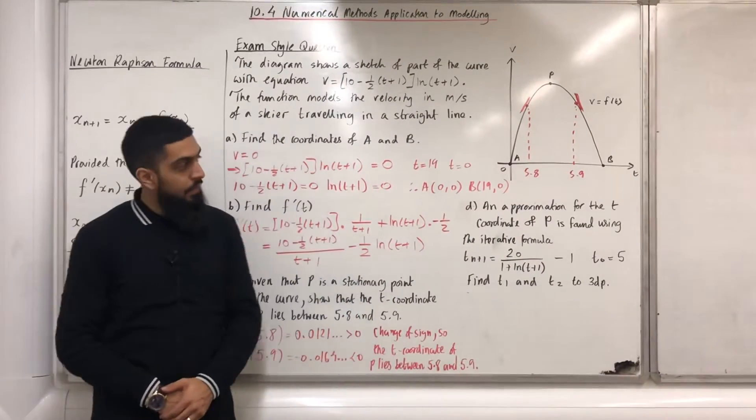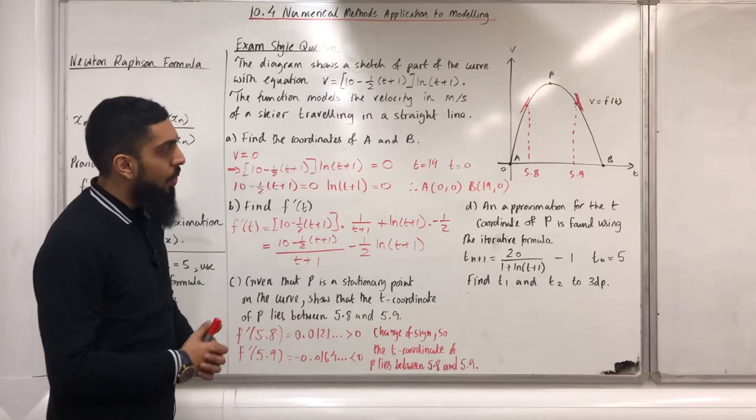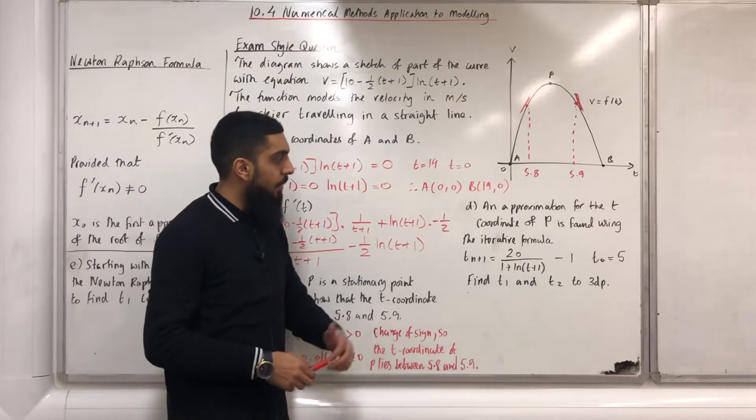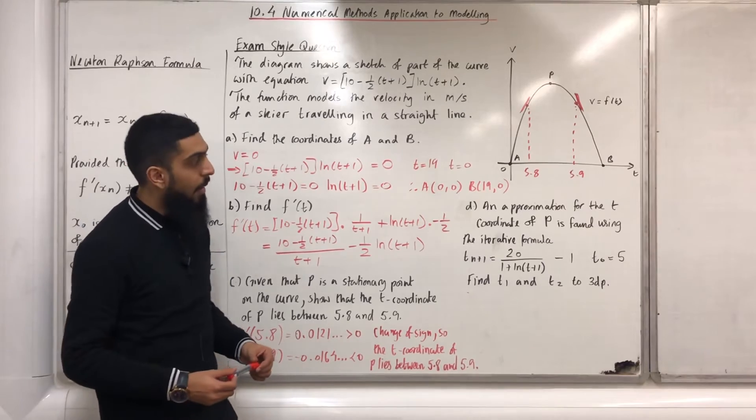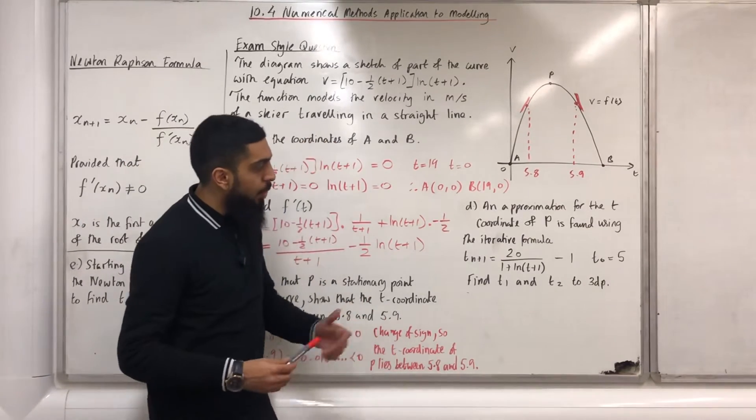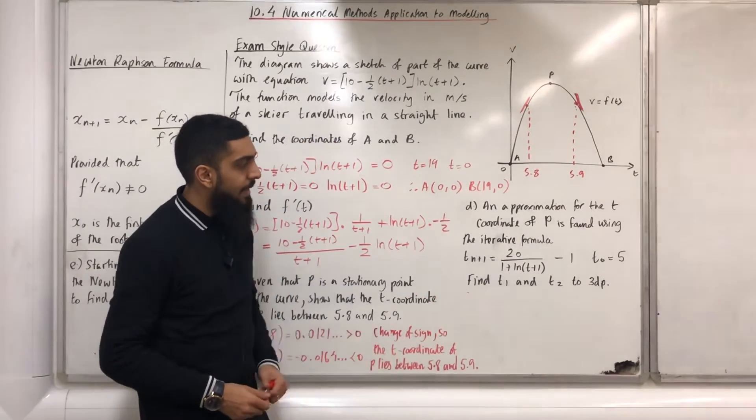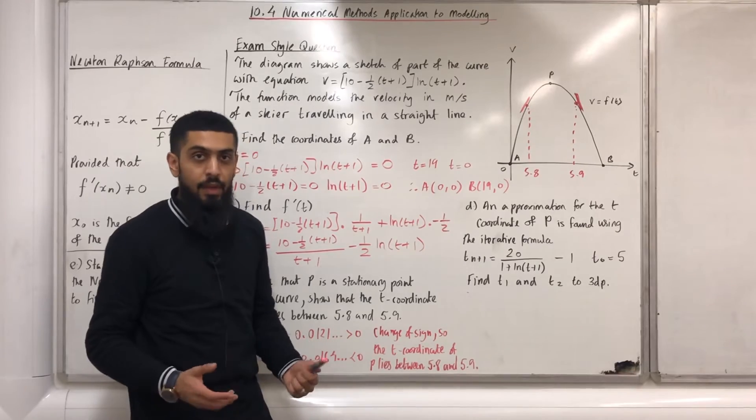An approximation for the t coordinate of P is found using the iterative formula t_(n+1) = 20/(1 + ln(t+1)) - 1. t_0 = 5. Find t_1 and t_2 to three decimal places.